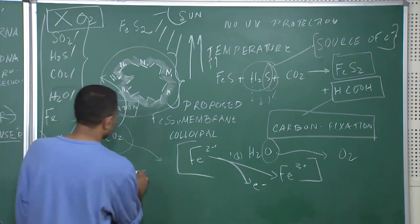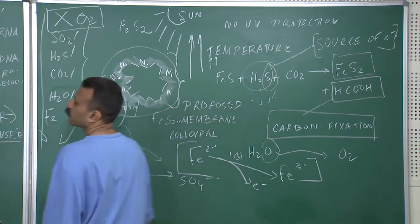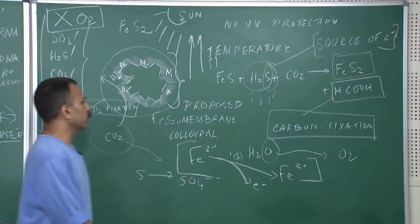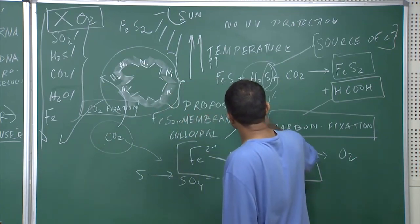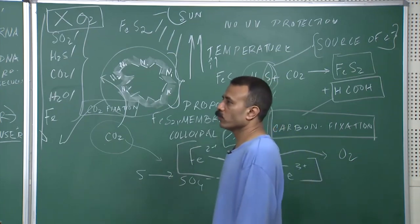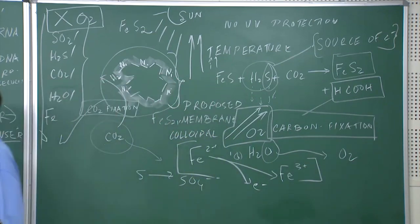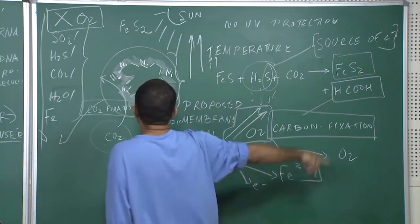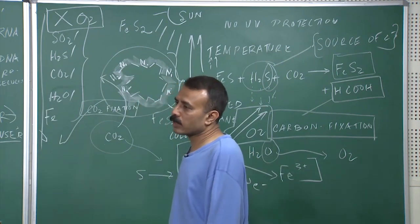The second thing that happened is sulphur started forming sulphates — all inorganic sulphurs were moving towards sulphates. This was a major transformation taking place, and slowly as this reaction progressed there was a slow rise of oxygen in the environment. Oxygen pressure was now increasing, and as this reaction prolonged on the floor of the earth, most of the primitive anaerobic microbes could not withstand the oxygen pressure and finally started to perish.